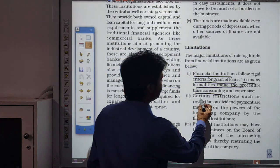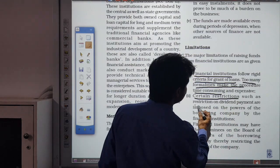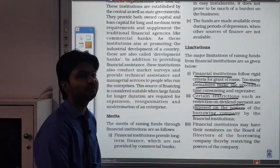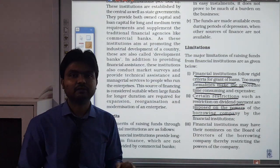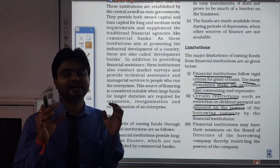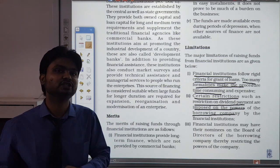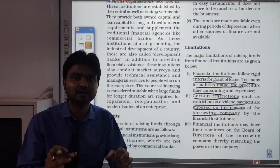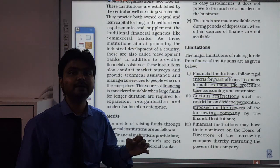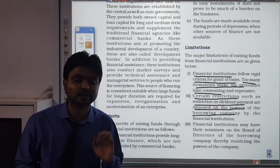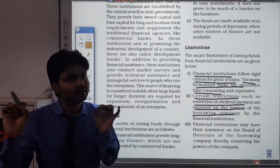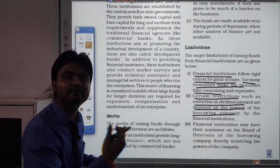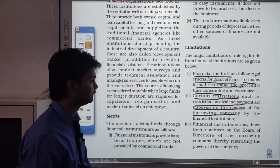Certain restrictions, such as restrictions on dividend payment, are imposed on the borrowing company. If a company wants to declare a dividend while it has already taken a loan from a financial institution, the institution can restrict that. They will say: first make the interest payment due to us, and only after that can you declare a dividend. Without clearing that, you cannot declare dividends.